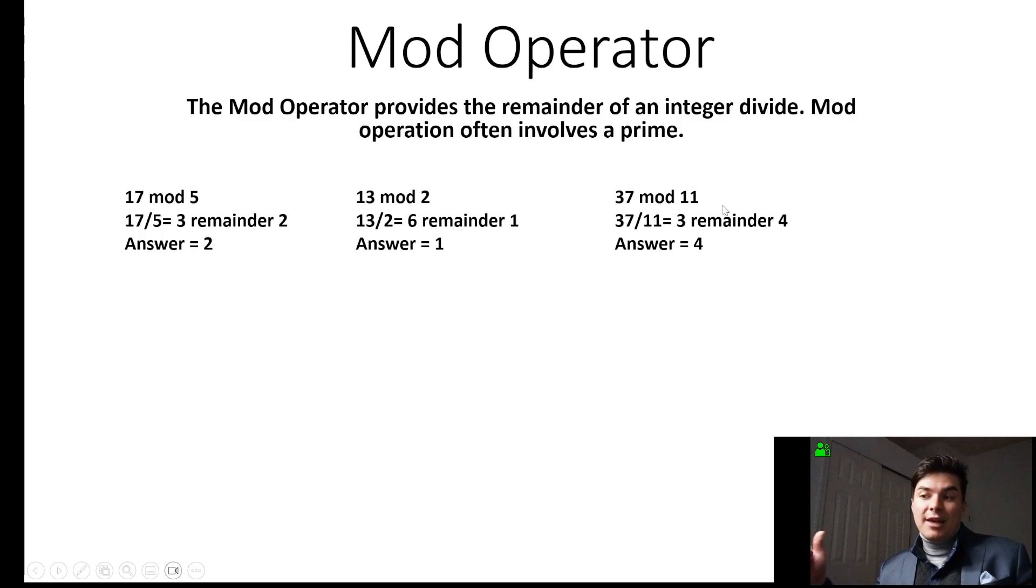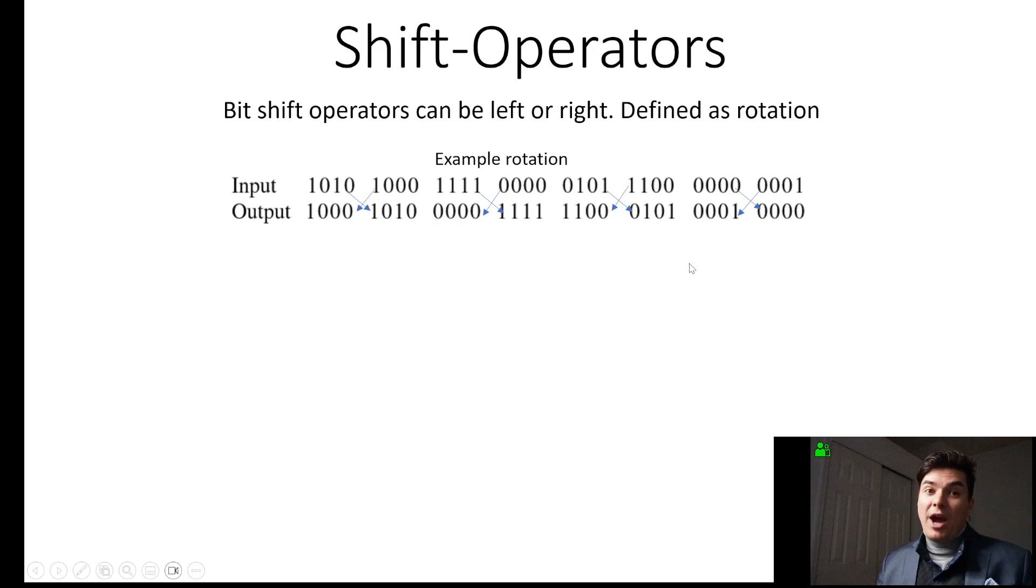37 mod 11. 11, 22, 33. So 37 minus that 33 gives us a remainder of 4. So the answer is 4. You have to know how to do the mod.